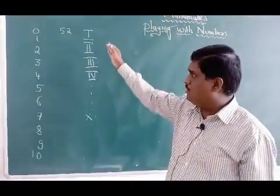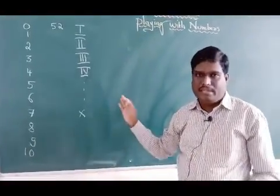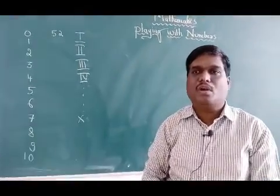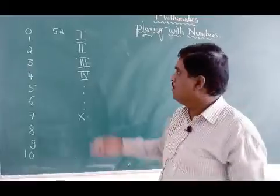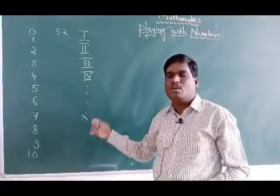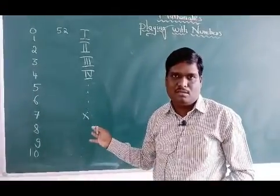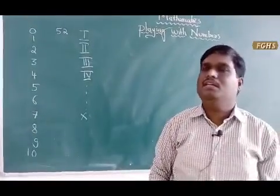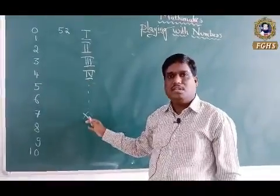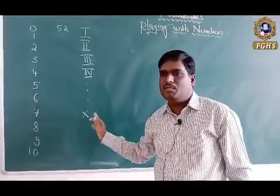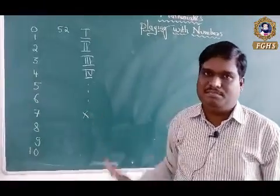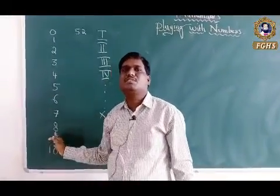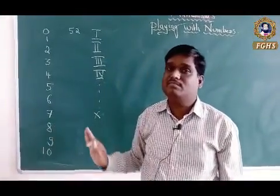The Roman number system did support counting of natural things, but it was not so comfortable. When we started multiplying, adding, or subtracting, the Roman number system did not prove to be a reliable system. So the decimal number system we have today is the most reliable one.